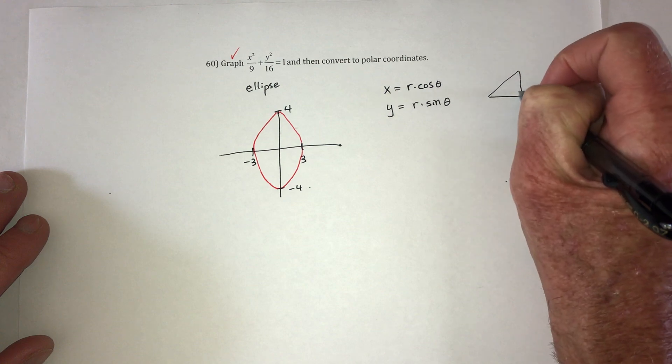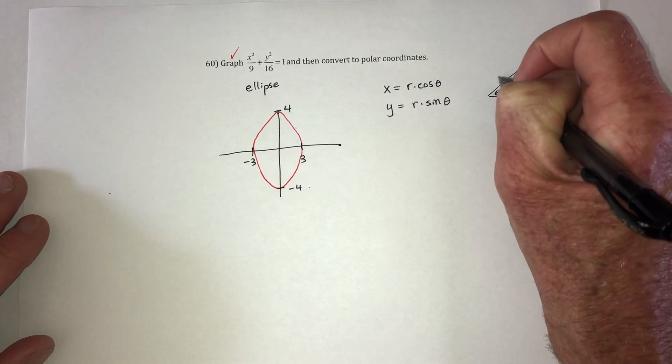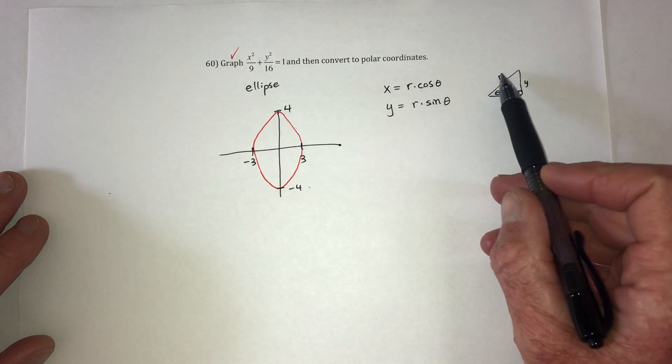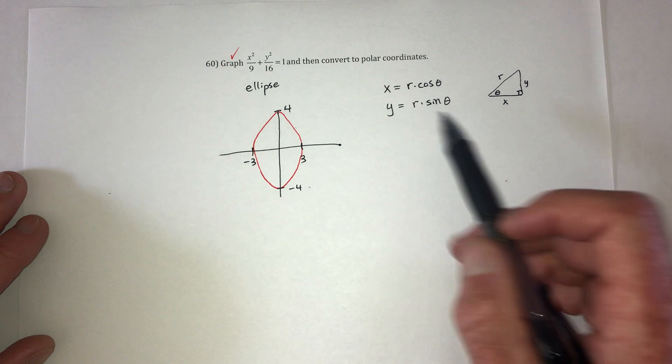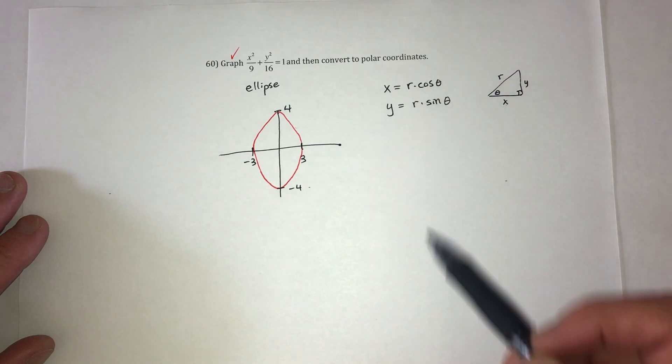And if you didn't watch it, it's basically just from the very beginning of the semester. Use the sine is y over r and then solve for y. Cosine is adjacent over hypotenuse, and then solve for x.